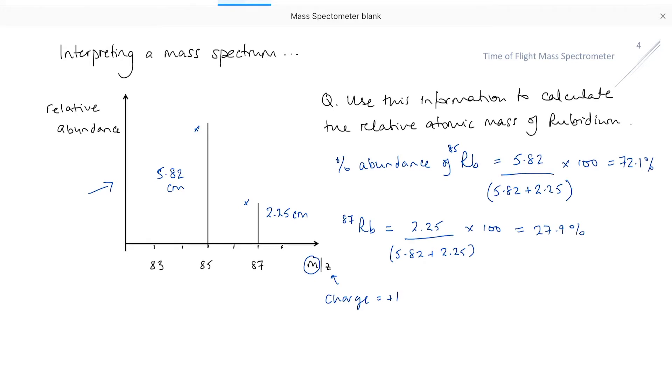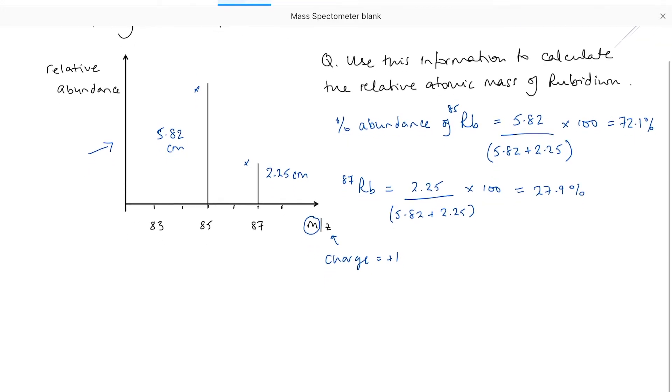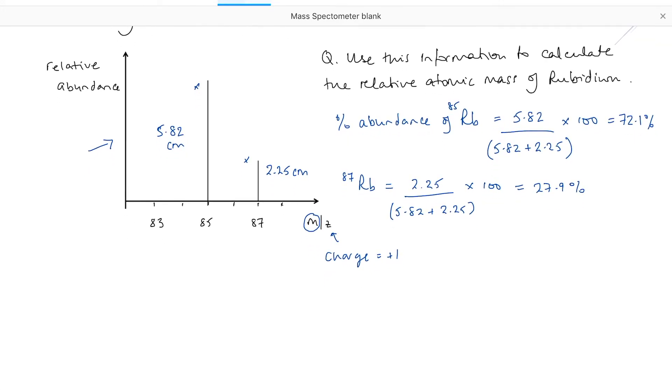So I can find the relative atomic mass in exactly the same way as we did at GCSE. What we need to do is, in each case,